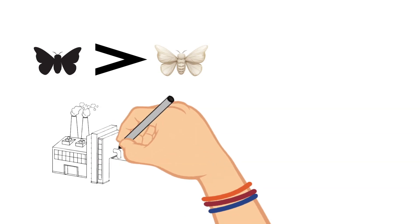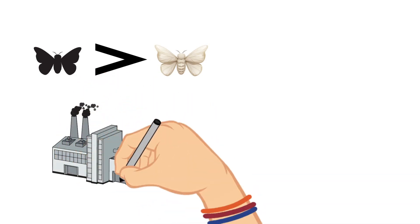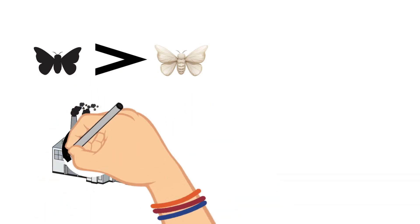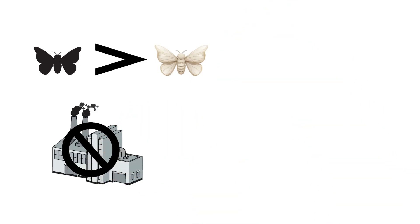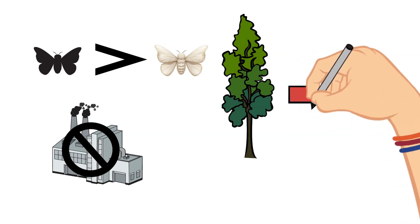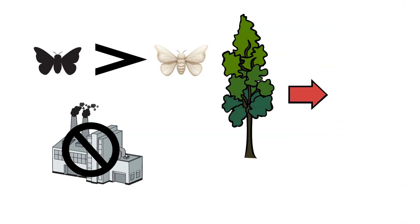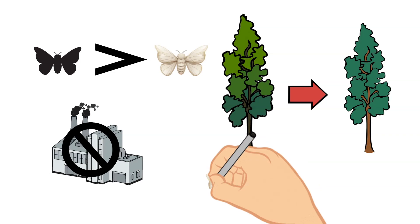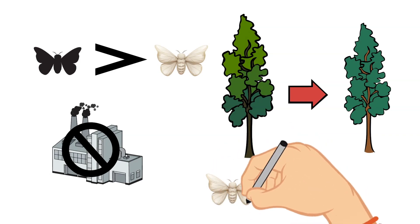The second world war came and with it many controls against pollution happened. This made it possible for the bark on the trees to become lighter again and it also made it possible for these light colored moths to succeed more than the dark colored moths.